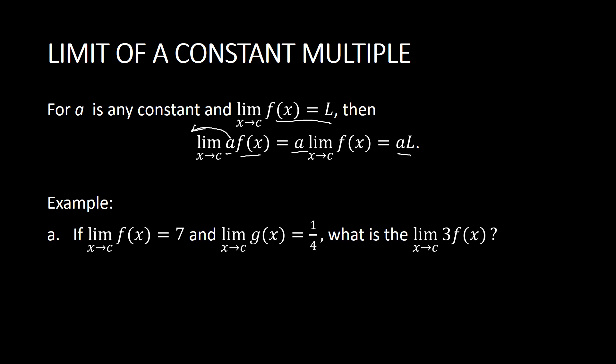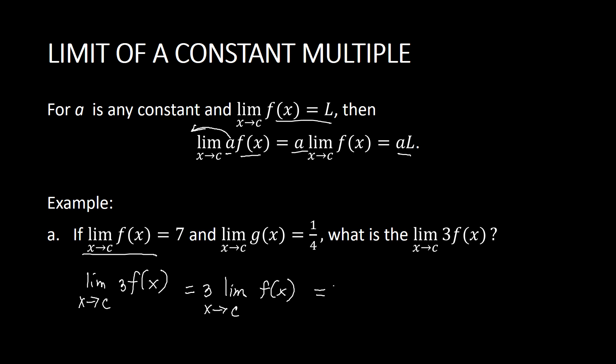So basically, we're just multiplying the two: a and L. For example, if the limit of f(x) as x approaches c is 7, and the limit of g(x) as x approaches c is one-fourth, what is the limit of 3 times f(x) as x approaches c? The limit of 3 times f(x) as x approaches c equals 3 times the limit of f(x) as x approaches c, which is declared as 7. So this is equivalent to 3 times 7, which equals 21.